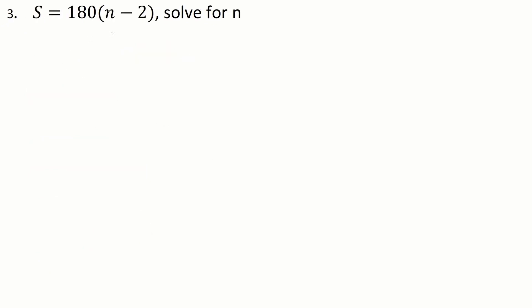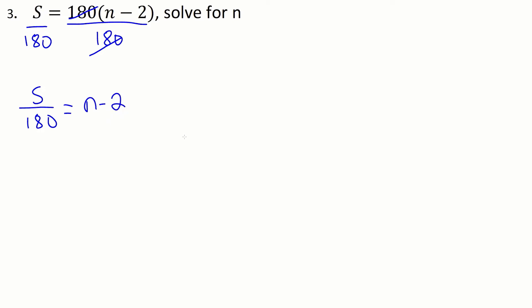Example 3: S is equal to 180 times N minus 2. It's the N that we're interested in here. So with these brackets here, we're going to try and do those last, and multiplication we'll try and do first. So let's divide both sides by 180 in order to get rid of the multiplication. On the left-hand side, we get S divided by 180. On the right-hand side, the 180s cancel, and now we can drop those brackets because they're not grouping it from anything else. Now we want to get rid of the subtraction by 2, so we're going to add 2 on both sides.